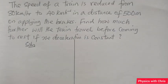The speed of a train is reduced from 80 km per hour to 40 km per hour in a distance of 500 meters. When applying the brakes, find how much further will the train travel before coming to rest if it maintains the same deceleration.